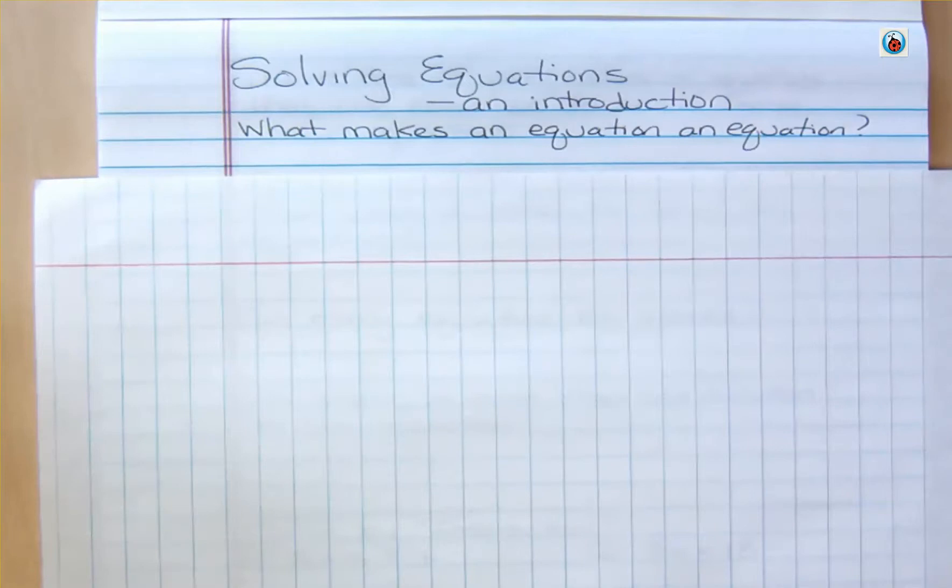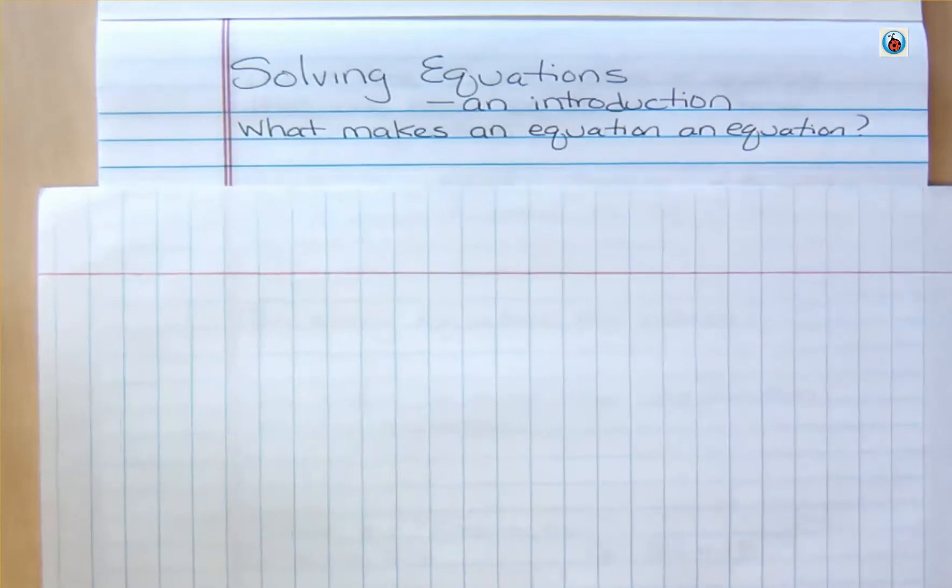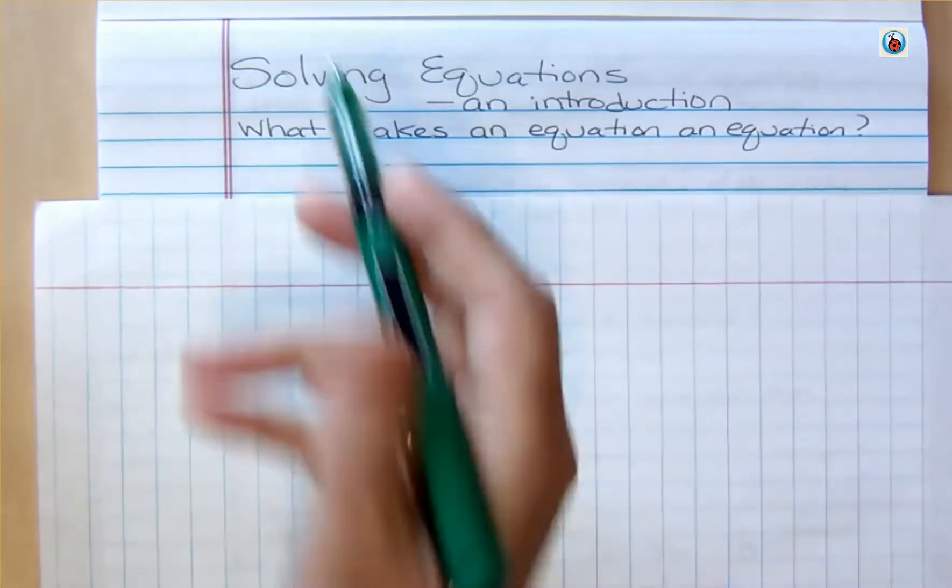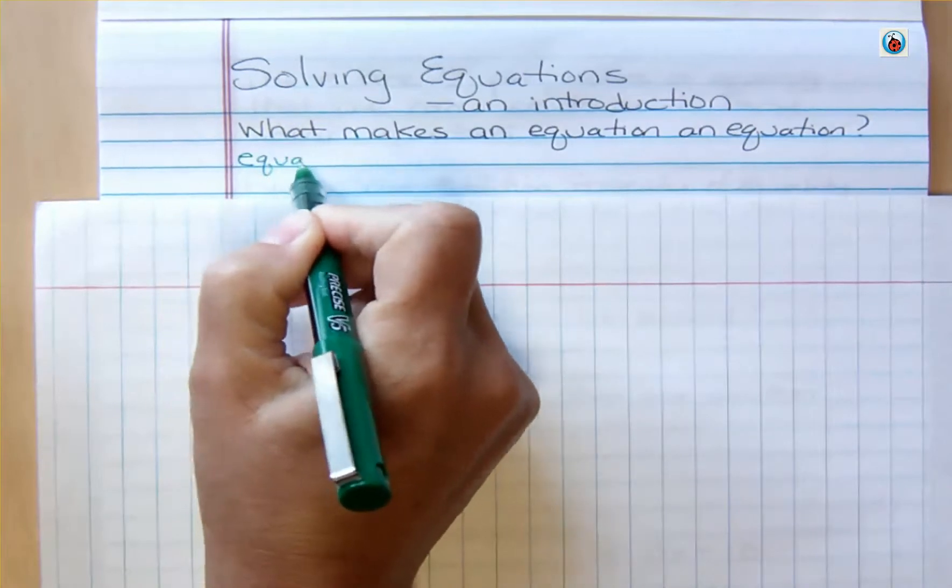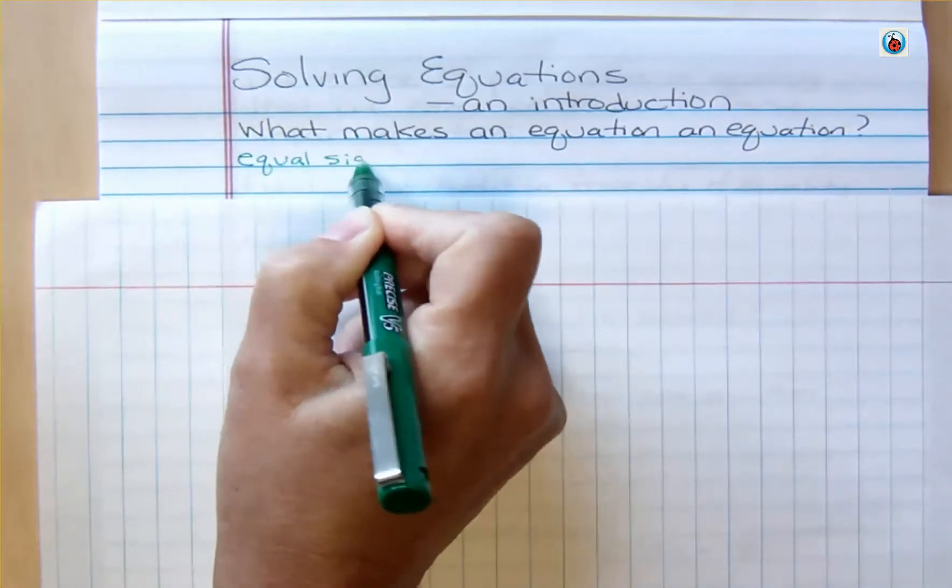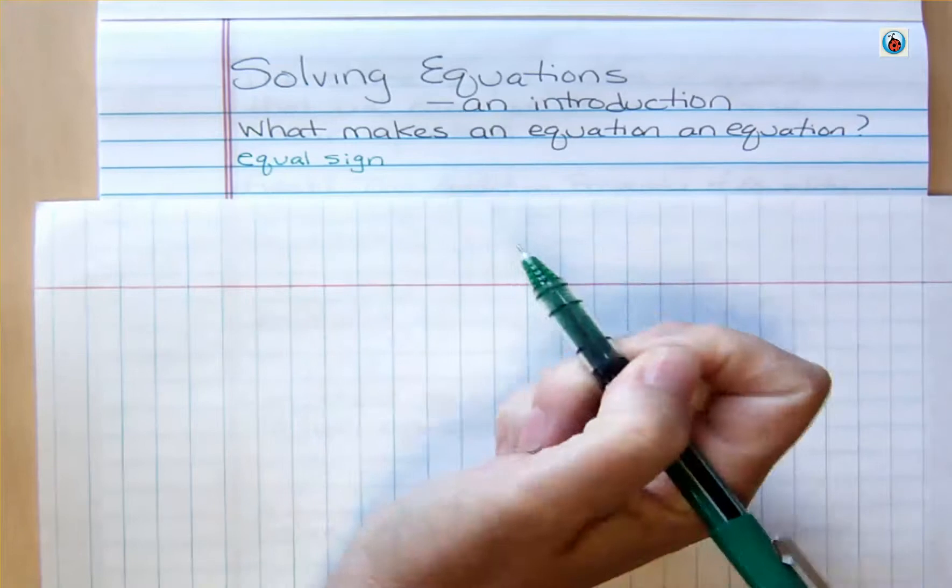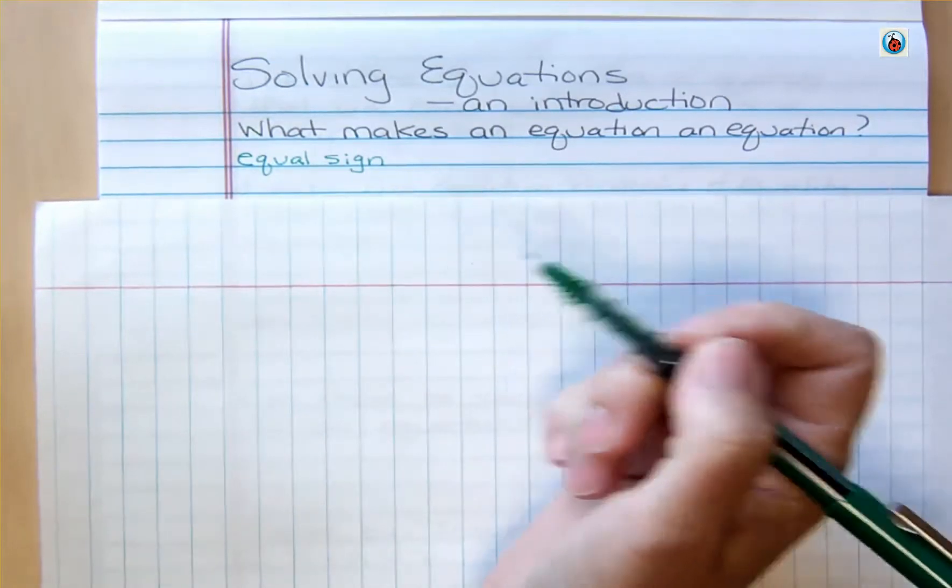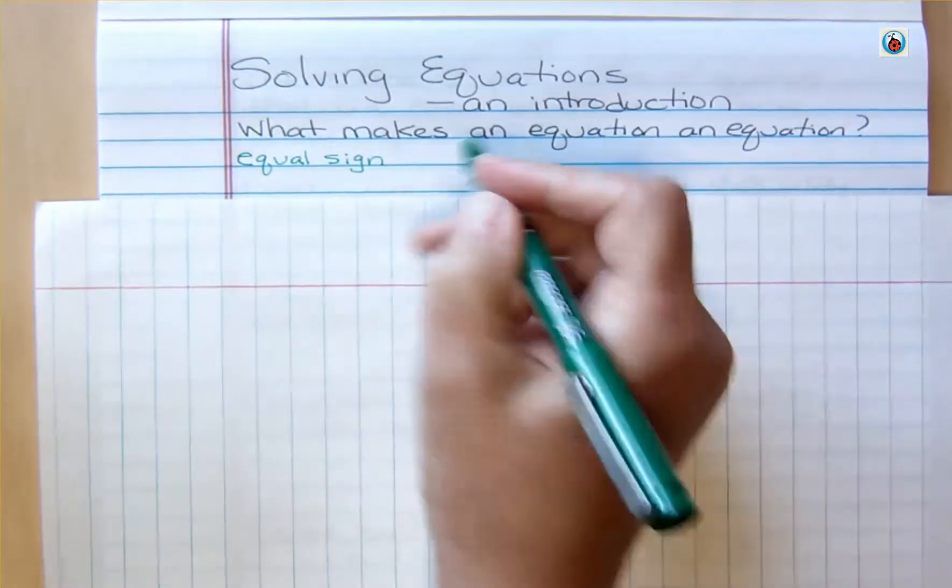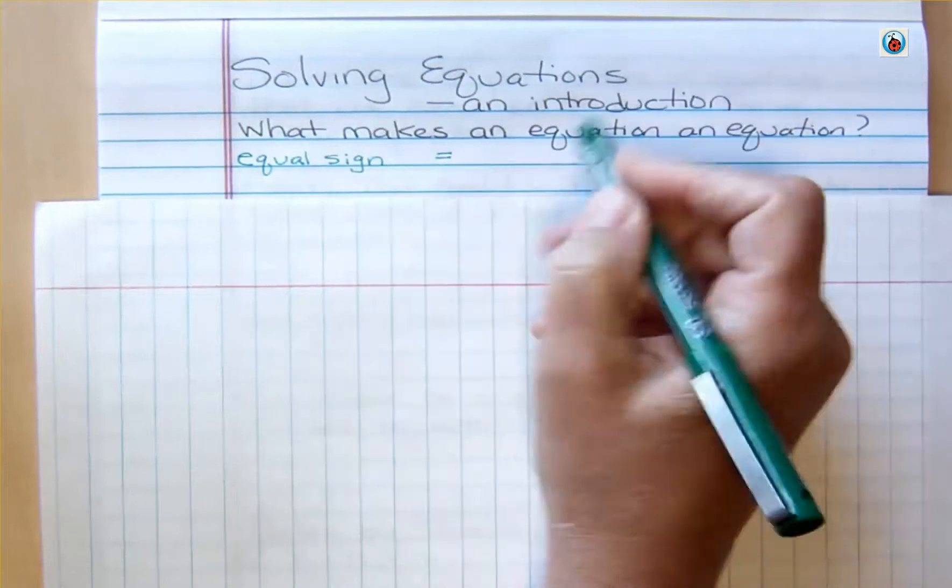First of all, what makes an equation an equation? It's really important to understand that an equation is an equation because it has an equal sign. An equal sign allows us to do things that we can't do without one. Without an equal sign, we have an expression, which is other things we can do, but we need an equal sign. So an equation has to have an equal sign.